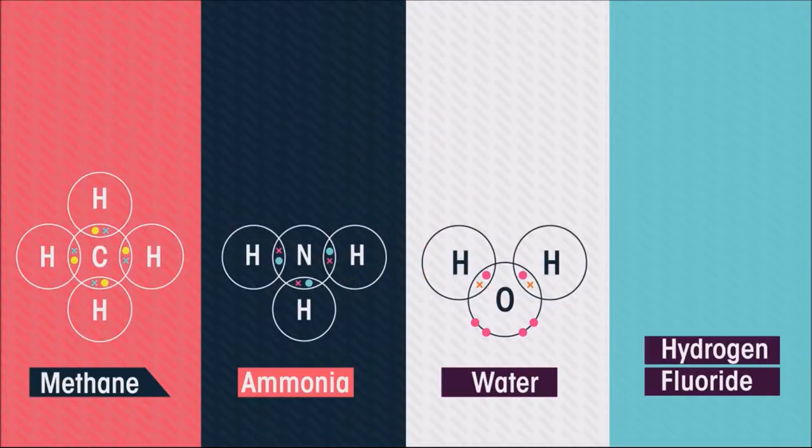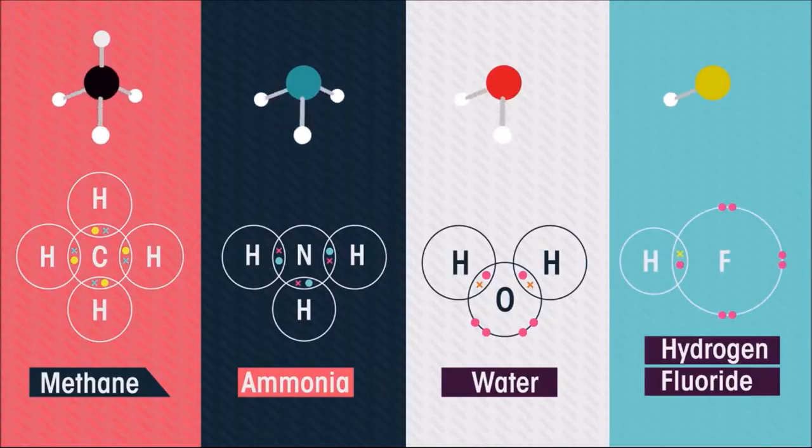Have you got it? Each structure contains four pairs of electrons that sit as far apart as possible. In methane, all four are in bonds. This makes methane tetrahedral in shape. Look at what happens when we draw methane, ammonia, water and hydrogen fluoride. Let's look at these shapes more closely.